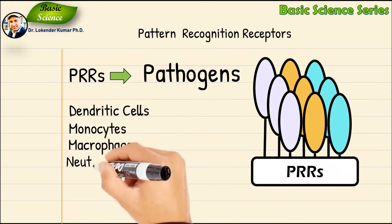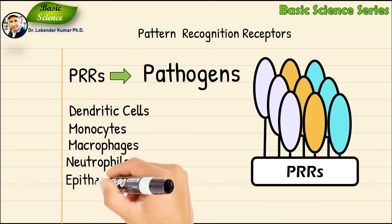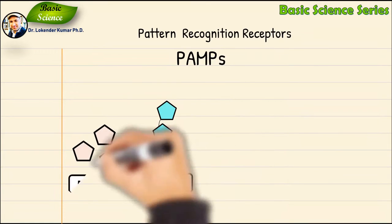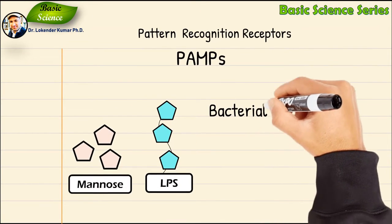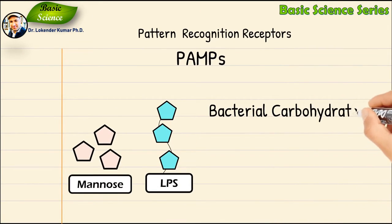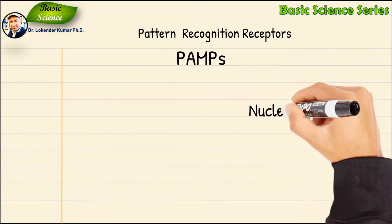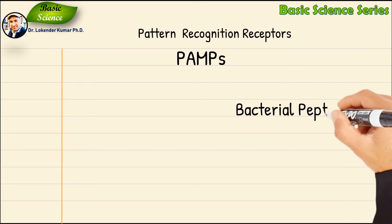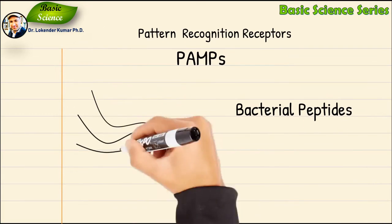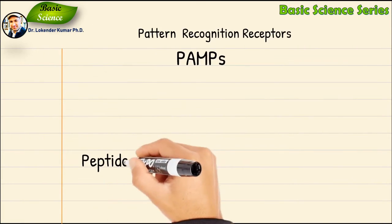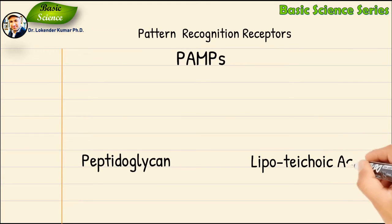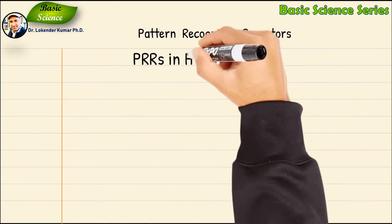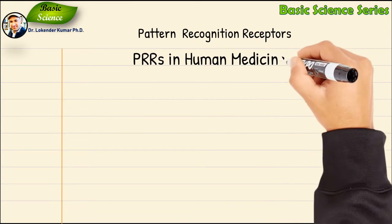PAMPs include bacterial carbohydrates such as lipopolysaccharide or mannose, nucleic acids such as bacterial or viral DNA, bacterial peptides such as flagellin or microtubules, peptidoglycans, and lipoteichoic acids.